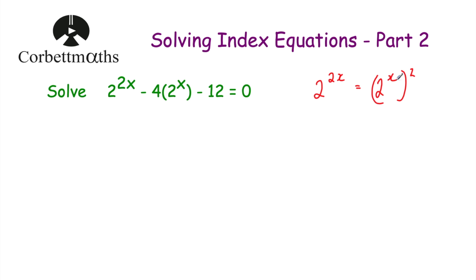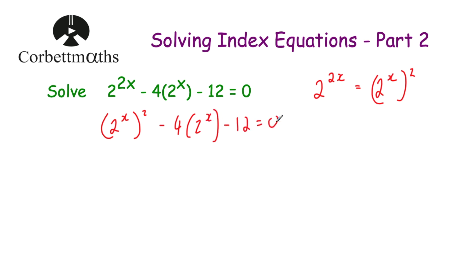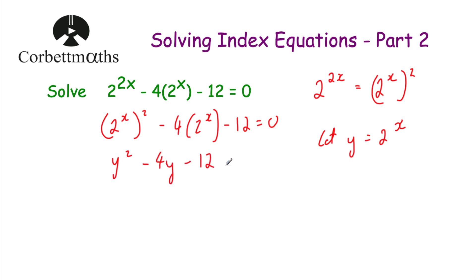Because if I was given 2 to the power of x, all squared, I would multiply the powers together to get 2 to the power of 2x. So I can rewrite this as 2 to the power of x, all squared, subtract 4 times 2 to the power of x, subtract 12 equals zero. This looks like a quadratic equation — we've got something squared subtract four times something take away 12 equals zero. So I'm going to let y equal 2 to the power of x.